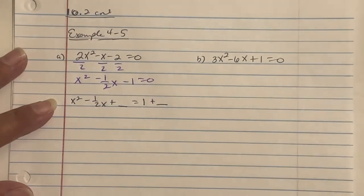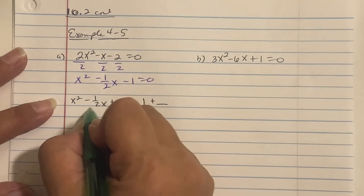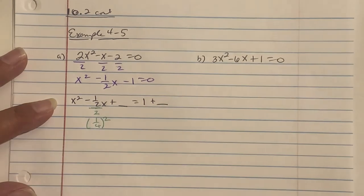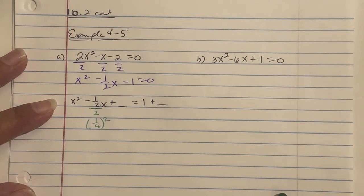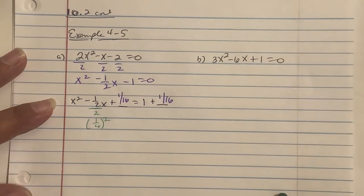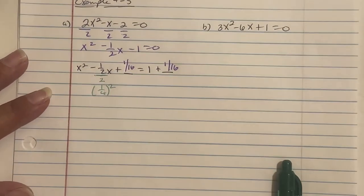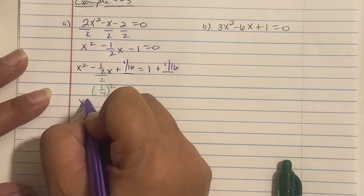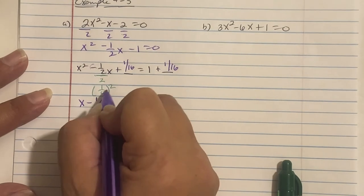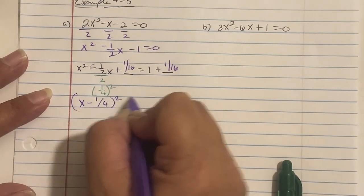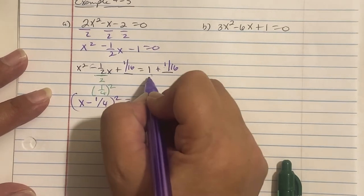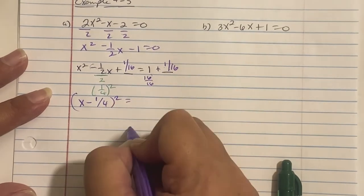Divide the middle coefficient by 2: one-half divided by 2 becomes one-fourth, which we then square to get one-sixteenth. We add one-sixteenth to the right side as well — always balancing. So we have (x minus one-fourth) squared equals 1 plus one-sixteenth. Since 1 equals 16 over 16, that gives 17 over 16.